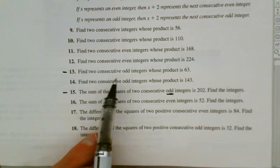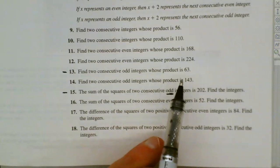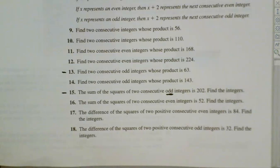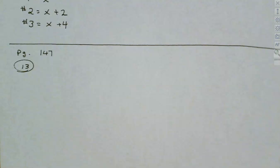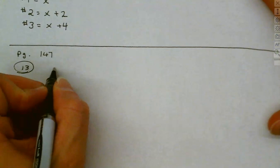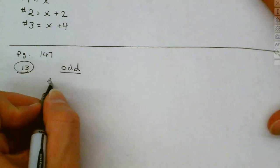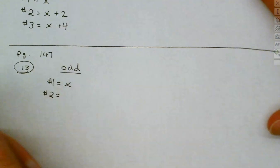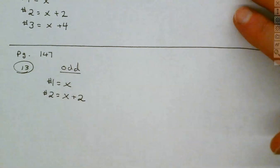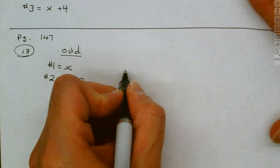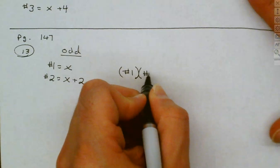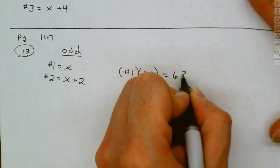We want to find two consecutive odd integers whose product is 63. Product means multiply, so when we write these out, we're going to be multiplying them. They're odd, so when we talk about odd consecutive integers, the gap is 2. Let's write up our equation: the first number is x, the second number is x plus 2 because they're odd. Product means multiply, so the first number times the second number gives me 63.